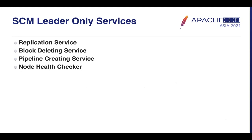SCM also runs background services to manage the cluster. With HA, certain services should only run on the leader node: Replication Service, Block Deletion Service, Pipeline Creation Service, and Node Health Service. When a failover occurs, the new leader starts these services and the old leader stops them.